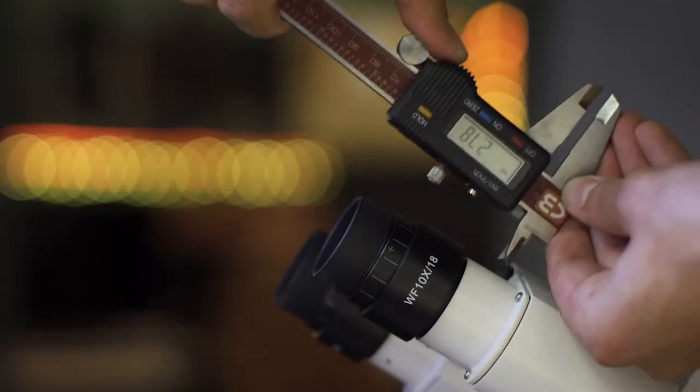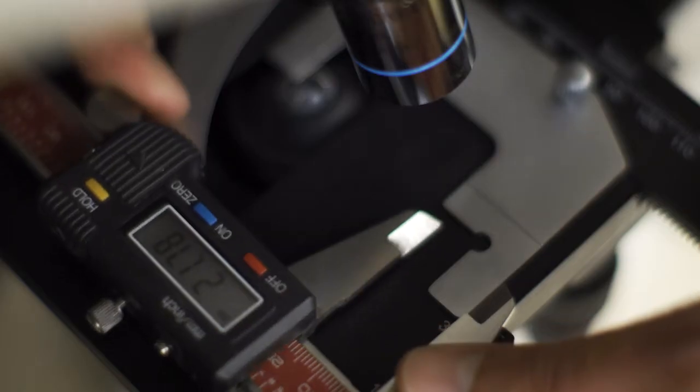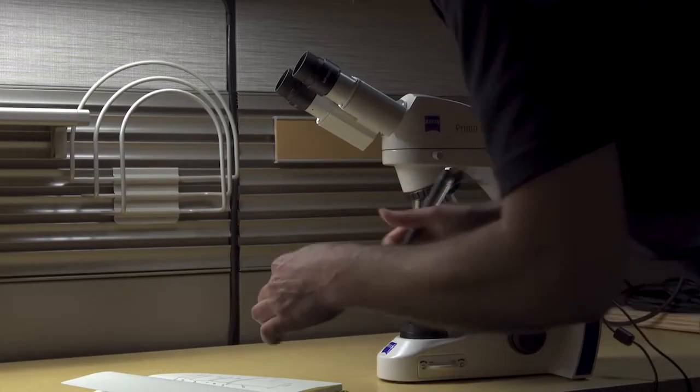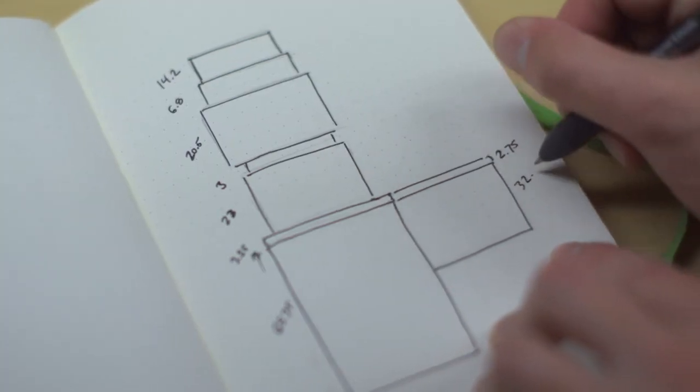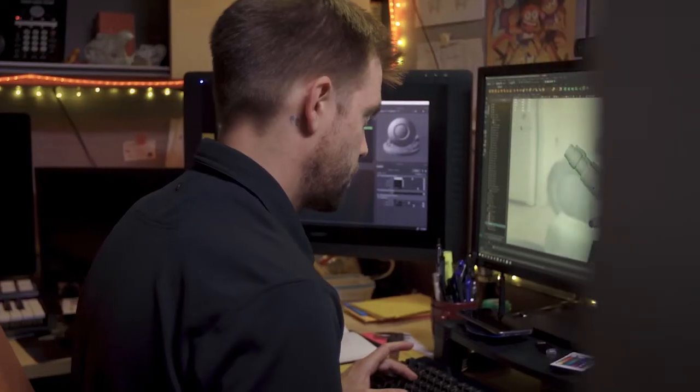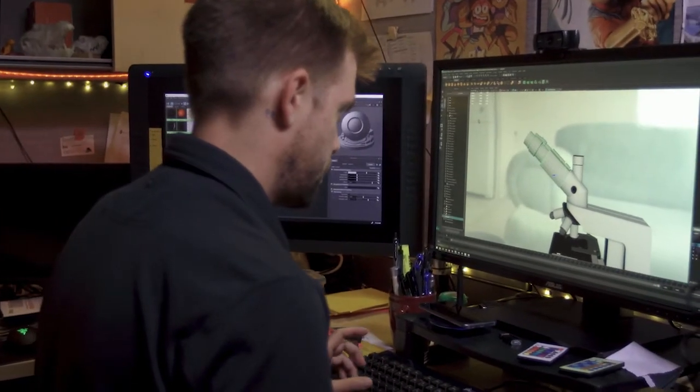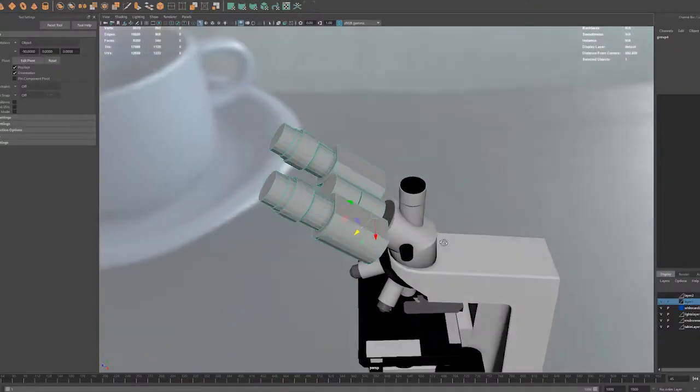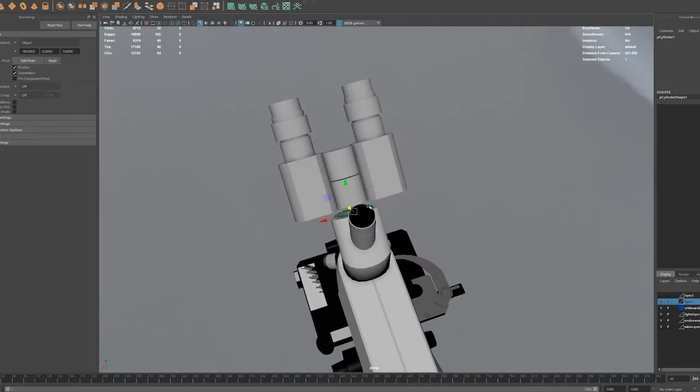Our first step in building the microscope was to figure out a way to replicate the in-person experience in an online interactive environment. So I took the exact microscope that students were using on campus and I measured it down to the millimeter so I could model the virtual one precisely. Then using 3D modeling software I was able to manipulate the basic shapes like cubes and cylinders to build an accurate digital model of the real microscope.